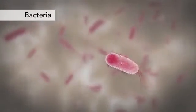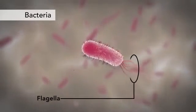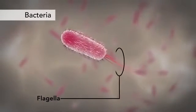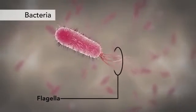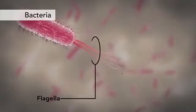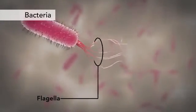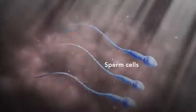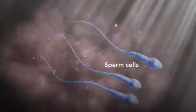Another unique feature in some cells is flagella. Some bacteria have flagella. A flagellum is like a little tail that can help a cell move or propel itself. The only human cell that has a flagellum is a sperm cell.